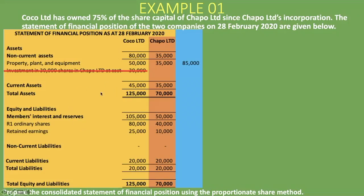Continuing to current assets — we add the two together. Unless there is intra-group trading (which we're not told about here), we simply add 45,000 rand plus 35,000 rand to get 80,000 rand. Adding those together gives us total assets of 165,000 rand.